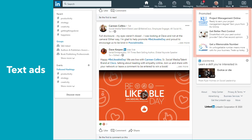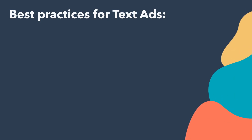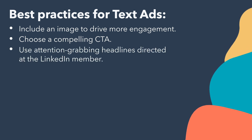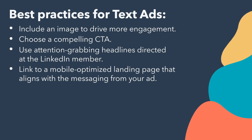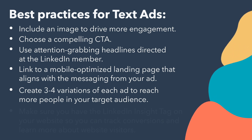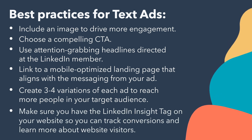Text ads are a self-service pay-per-click or per-impression option from LinkedIn, similar to Google AdWords. You can advertise for lead gen offers, job opportunities, or groups to the audience of your choosing. Best practices include including an image to drive more engagement, choosing a compelling CTA, using attention-grabbing headlines directed at the LinkedIn member, linking to a mobile-optimized landing page that aligns with your ad messaging, and creating three to four variations of each ad. Make sure you have the LinkedIn insight tag on your website to track conversions and learn more about website visitors.